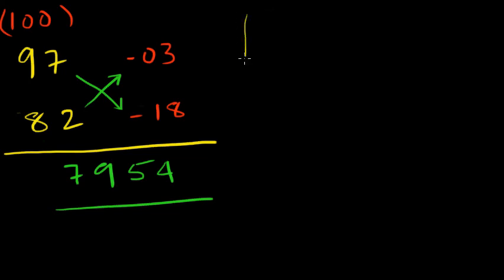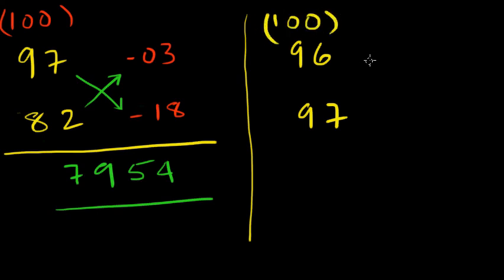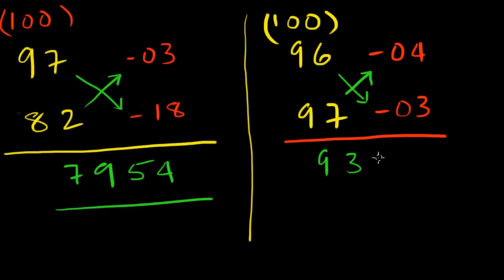Let's do one more problem. Let's do 96 times 97. Again, it's closer to our base of 100. So, complement of 96 is 04. And complement of 97 is 03. And we did the same thing. Either or subtraction. So 96 minus 03 is 93. And 4 into 3 is 12.